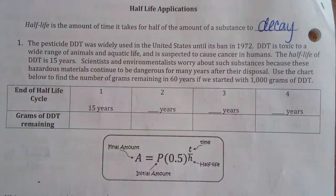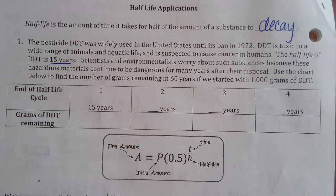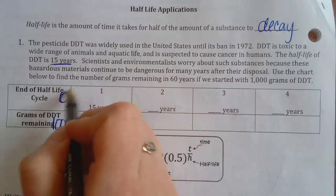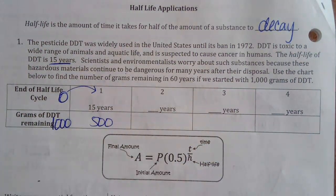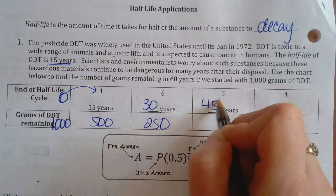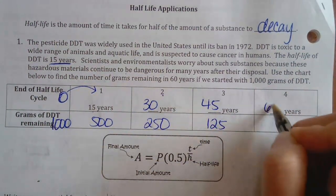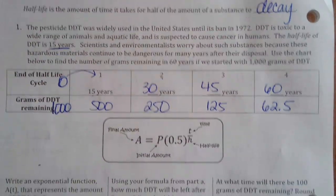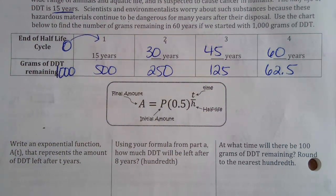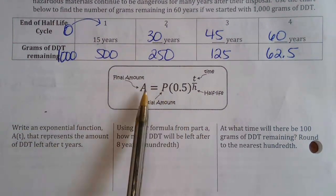The pesticide DDT was widely used in the US until banned in 1972 — it's toxic to a wide range of animals and aquatic life, and its half-life is 15 years. Starting with 1,000 grams: after one half-life (15 years) there's 500 grams; after 30 years, 250 grams. It keeps cutting in half every 15 years — it'll never fully go away. This is also how scientists carbon-date petrified trees or dinosaurs.